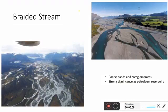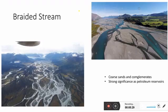Here is another example of a braided stream depositional environment. The dominant lithologies are coarser sand and conglomerates. These are a strong candidate for petroleum reservoirs — in the world there are some reservoirs deposited in braided stream environments that have proved to be good petroleum reservoirs.